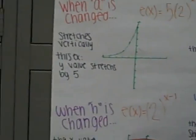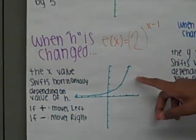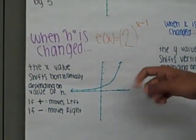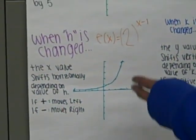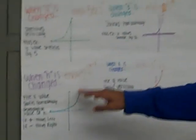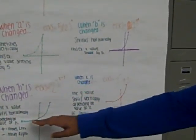Alright, now when h is changed, the x value shifts horizontally depending on the value of h, but the trick is that if it's positive, it actually moves to the left, and if it's negative, it moves to the right. In our example, we used 1, and the whole graph shifted 1, and also it sloped a little bit inward to 1.